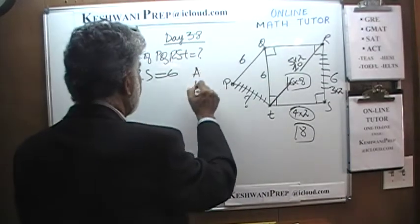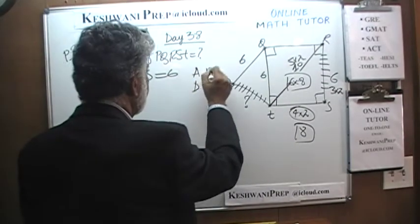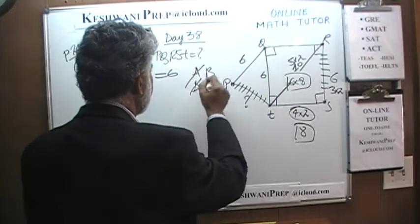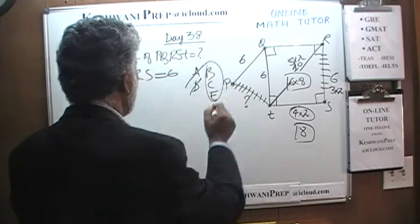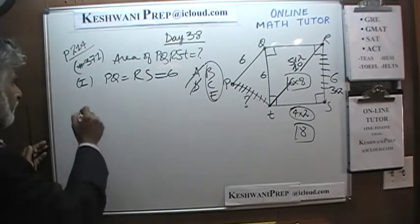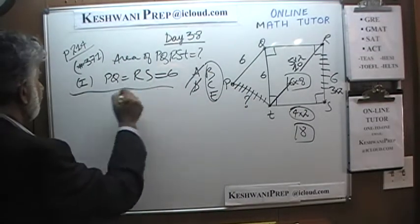A, D, B, C, E. The first statement by itself is not enough. The answer has to be either B, C, or E, depending on what happens in the second statement.